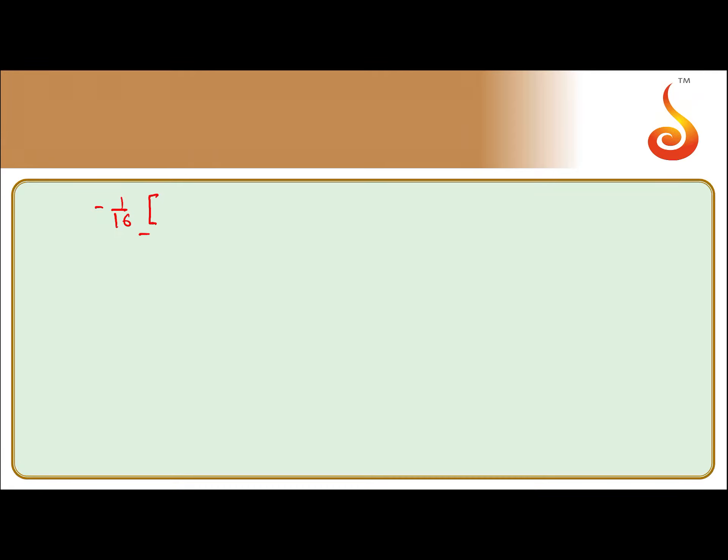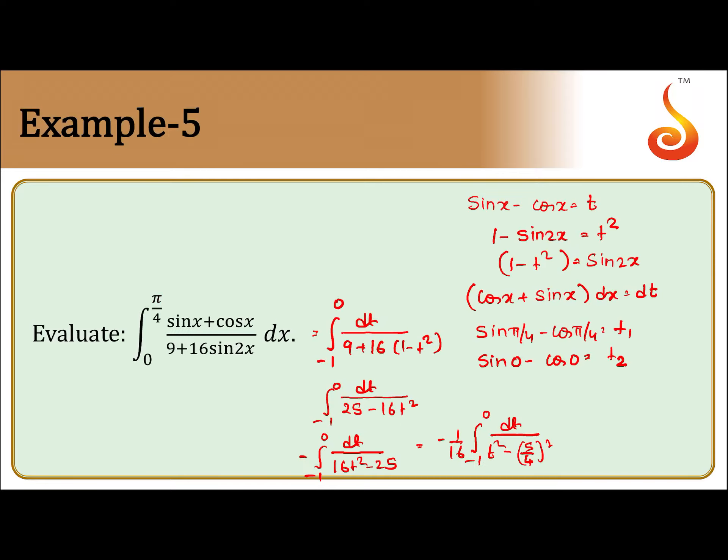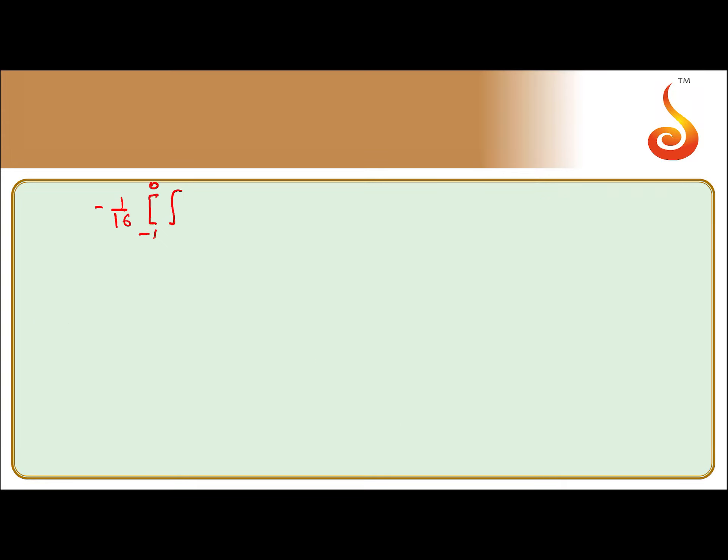So we write here -1/16, limits are from -1 to 0, integral of dt/(t² - (5/4)²). This is nothing but -1/16 times 1/(2 × 5/4) log|(t - 5/4)/(t + 5/4)|.